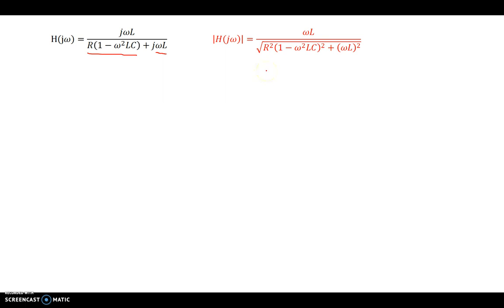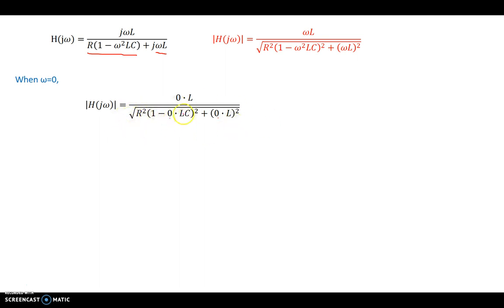To find the magnitude response, as we have done for low-pass and high-pass filter exercises before, we will substitute ω = 0 and ω = ∞ and see what happens. Starting with ω = 0: replacing 0 everywhere, the top part becomes 0 × L = 0. We don't even need to consider the bottom part, because 0 divided by any quantity equals 0. So at ω = 0, the magnitude of the transfer function is equal to 0.